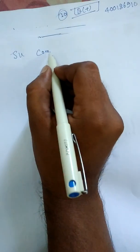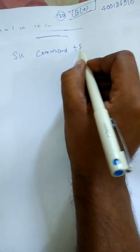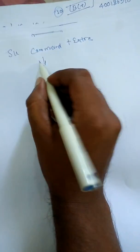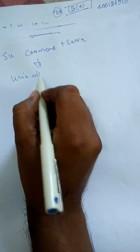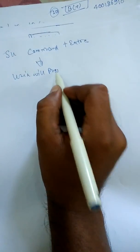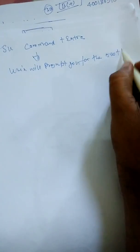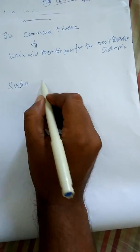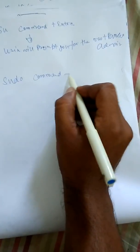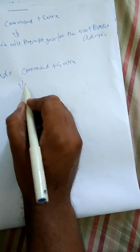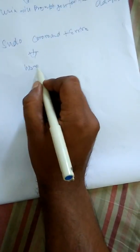There are around two or three differences between the su and sudo commands. First difference: if you are using the su command and press enter, Unix will prompt you for the root password or admin password. But if you are using the sudo command and press enter, Unix will prompt you for the user password that you used to log in to Unix.